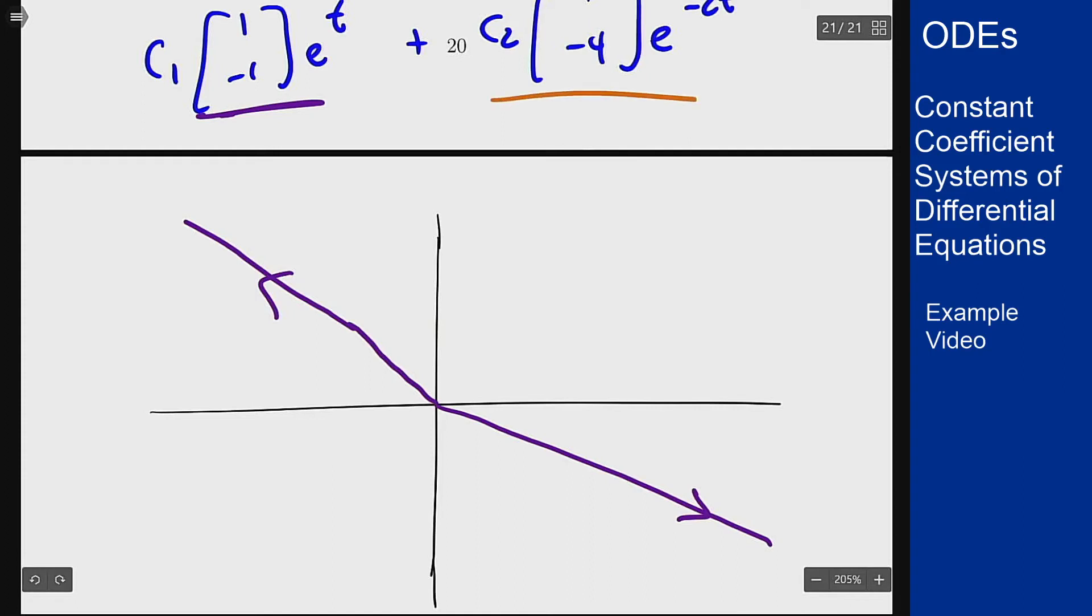Our second in orange is (1, -4), so drawing the vector 1 in x, -4 in y extends as a straight line. This is e^(-2t) so it's going to go inward as time goes on.